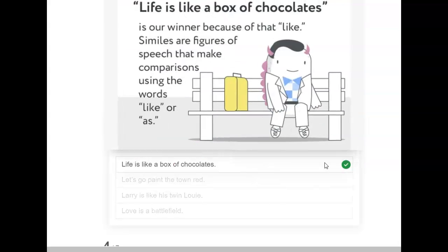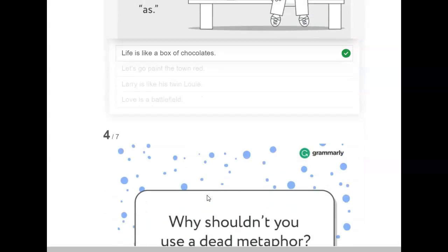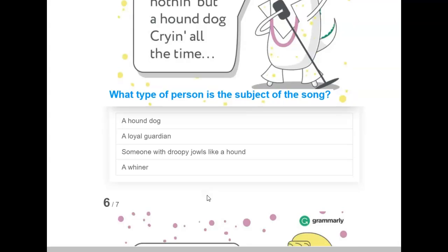Life is like a box of chocolates is our winner because of that like. Similes are figures of speech that make comparisons using words like or as. Now, although this one, Larry is like his twin Louie, has the word like there, that is true. But Larry literally is like his twin Louie because they are twins. So a simile has to compare two things that are not exactly alike to make a comparison. You can't make a comparison between two twins when they are alike.